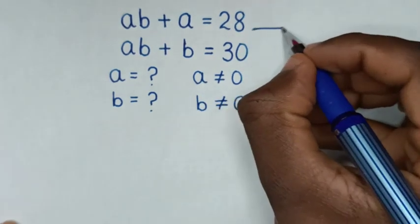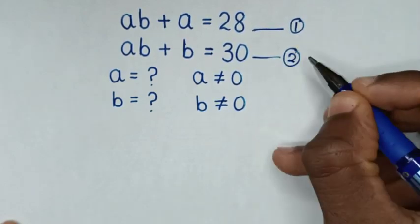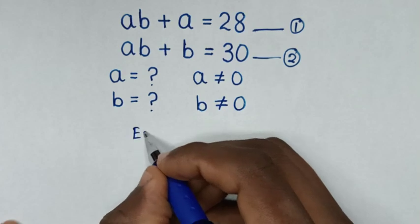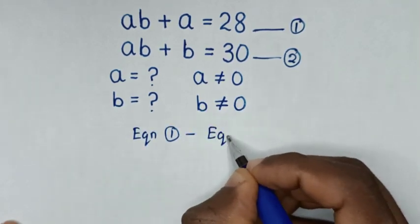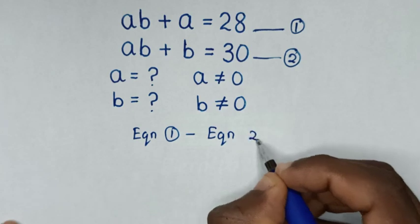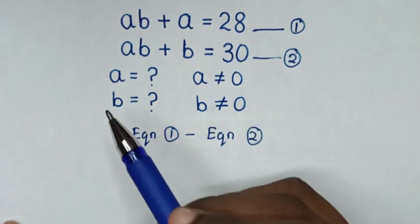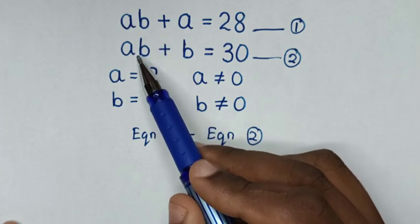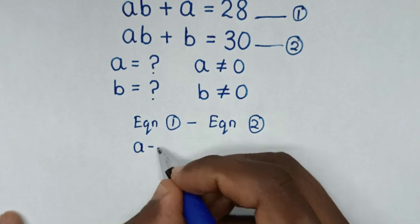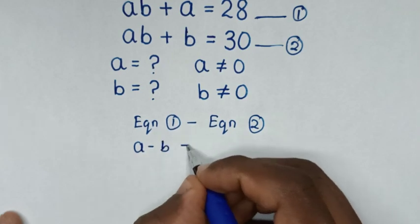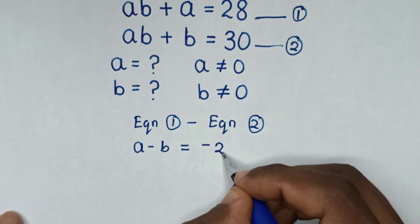We'll let the first equation be equation 1 and the second equation 2. Then we'll take equation 1 minus equation 2. AB minus AB is 0, then A minus B is equal to 28 minus 30, which is negative 2.